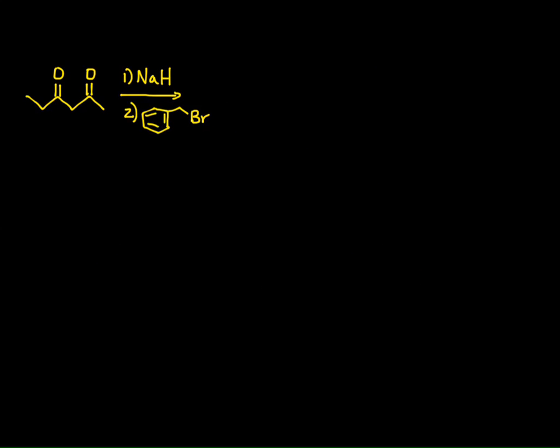Let's look at a couple of examples. Here is a beta-diketone. I'm reacting it with a strong base — in this case sodium hydride. I'm not using an alkoxide here because the ketones don't have good leaving groups to come off. So I'm simply using sodium hydride to form my enolate, then reacting that enolate with benzyl bromide, and it adds to the alpha position — I get that benzyl group added to the alpha position.